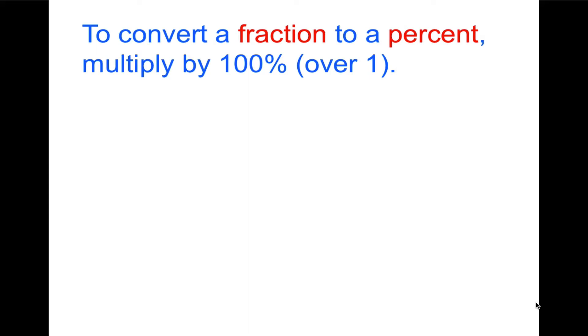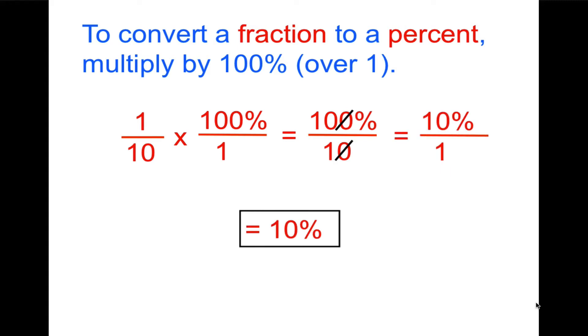To convert a fraction to a percent, you just multiply by 100%, and you make that a fraction: 100% over 1. Here's an example. To make 1 tenth into a percent, multiply by 100% over 1. 1 times 100 equals 100% over 10, and then we're going to reduce it or divide by 10, and you get 10% over 1 equals 10%.